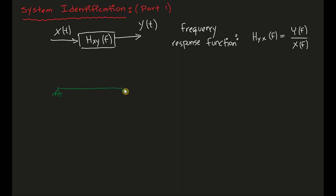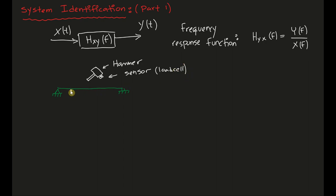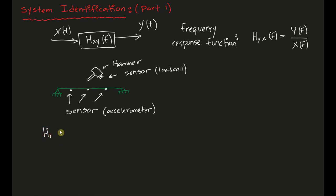Frequency response functions have tremendous applications in resonance analysis and the typical hammer impact analysis that are very common in experimental dynamics. Here I'm drawing a hammer — these are scientific instruments with sensors on them. Impact hammers have load cells so you can measure the input force entering the system. You can imagine a bridge with several sensors on it; a good example is an accelerometer. Nowadays all smartphones have accelerometers, so we could actually use a smartphone for this kind of sensing.